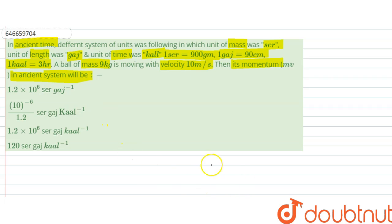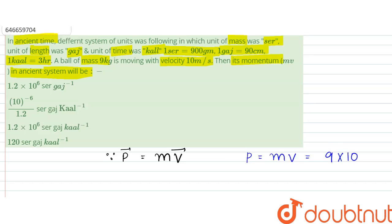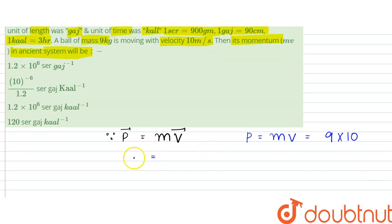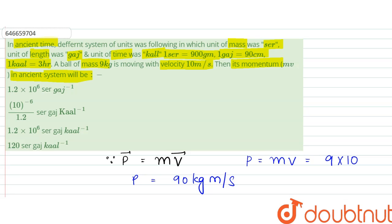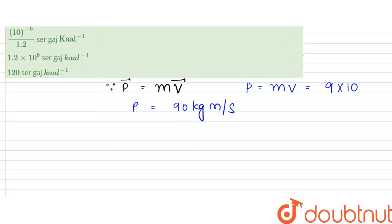Since we know that momentum is equal to mass into velocity, momentum equals MV, which is equal to 9 kg into 10 meters per second. So it would be equal to 90 kg meters per second.